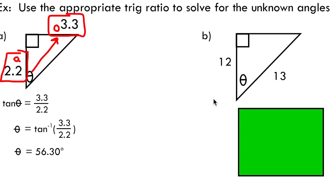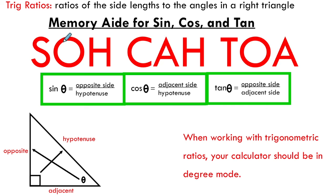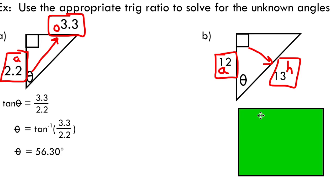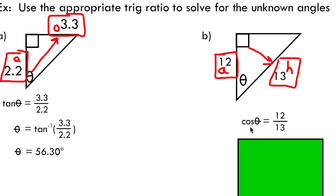Let's take a look at another example. Looking at this triangle, I'm given an unknown angle theta, and I don't have the opposite side length, so I'm not interested in that side. I do have the hypotenuse — the side across from the right angle — so I'll label that H. The side length of 12 is the adjacent side, next to my unknown angle. I want a trig ratio relating adjacent to hypotenuse. Using SOHCAHTOA, that's CAH — the cosine ratio: adjacent over hypotenuse. So cosine of theta equals 12 over 13.